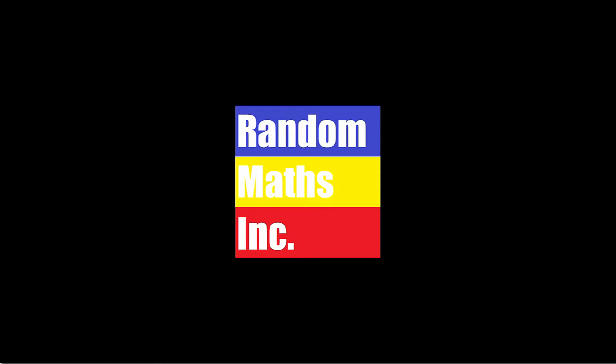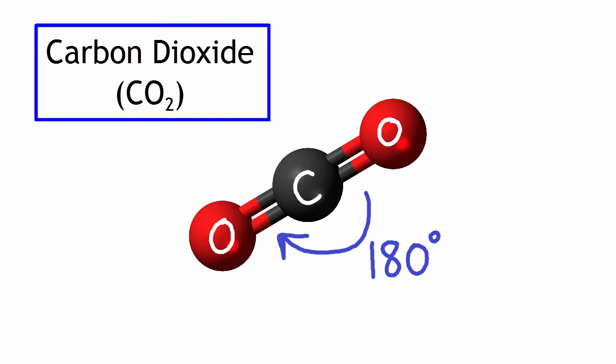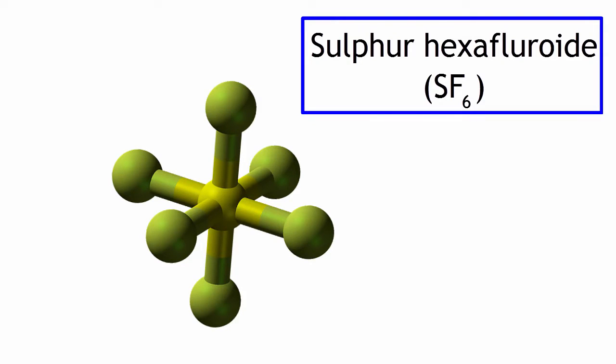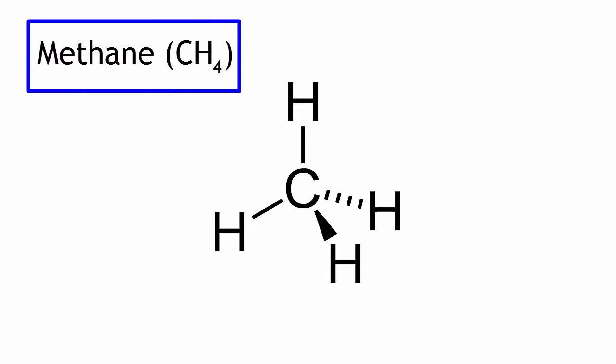If you've done chemistry before, you've probably studied bond angles of various molecules. You might have come across molecules like carbon dioxide, which has a linear shape and a bond angle of 180 degrees, or sulfur hexafluoride, which has an octahedral shape and bond angles of 90 degrees, or methane, which has a tetrahedral shape and bond angles of 109.5 degrees.